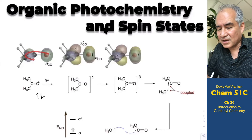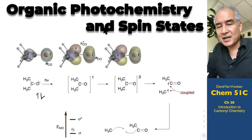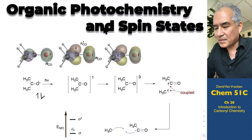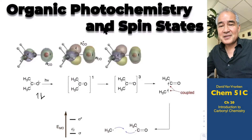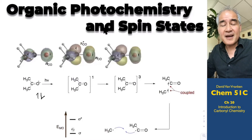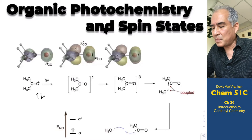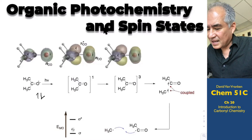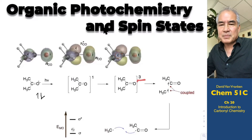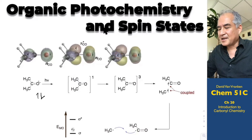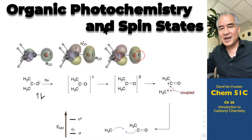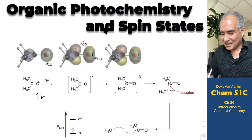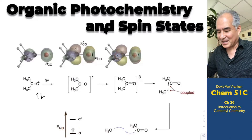So one of the electrons that was in the non-bonding orbital is now spending its time in a completely different part of space, in the pi-star orbital. Those electrons initially keep their spin — one up, one down — but that's not favorable. It turns out it is energetically more favorable for the other electron to flip its spin so that both spins are up. We refer to this as a triplet state. If both electrons have spin up, you cannot form a bond with those two electrons — you can't have two spin-up electrons in the same orbital.